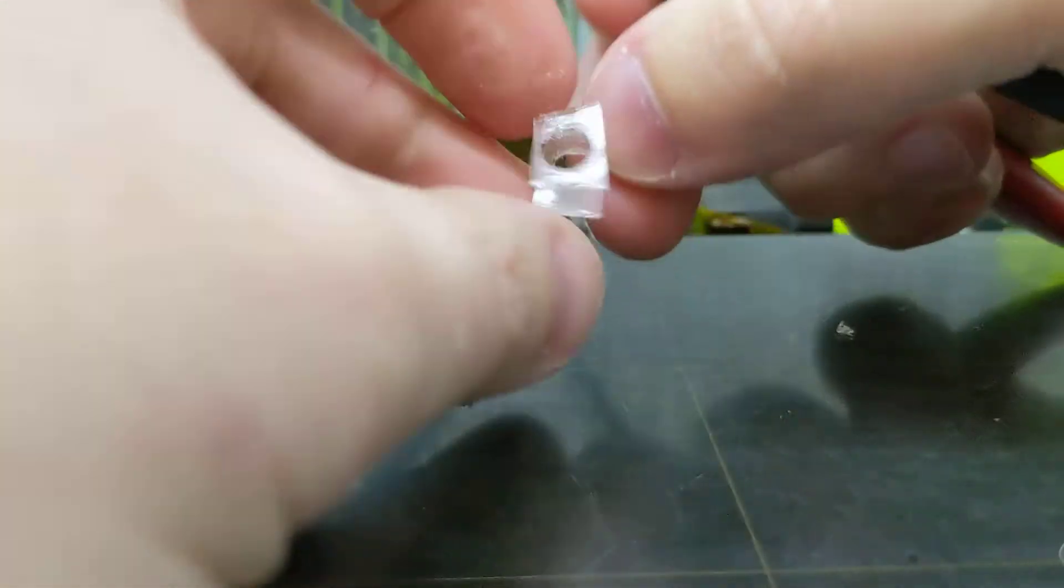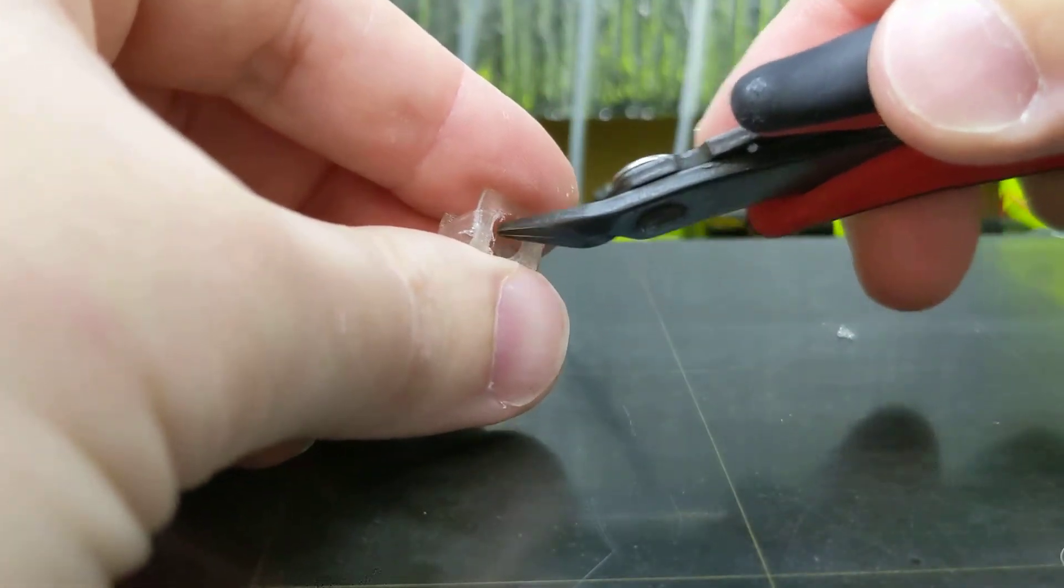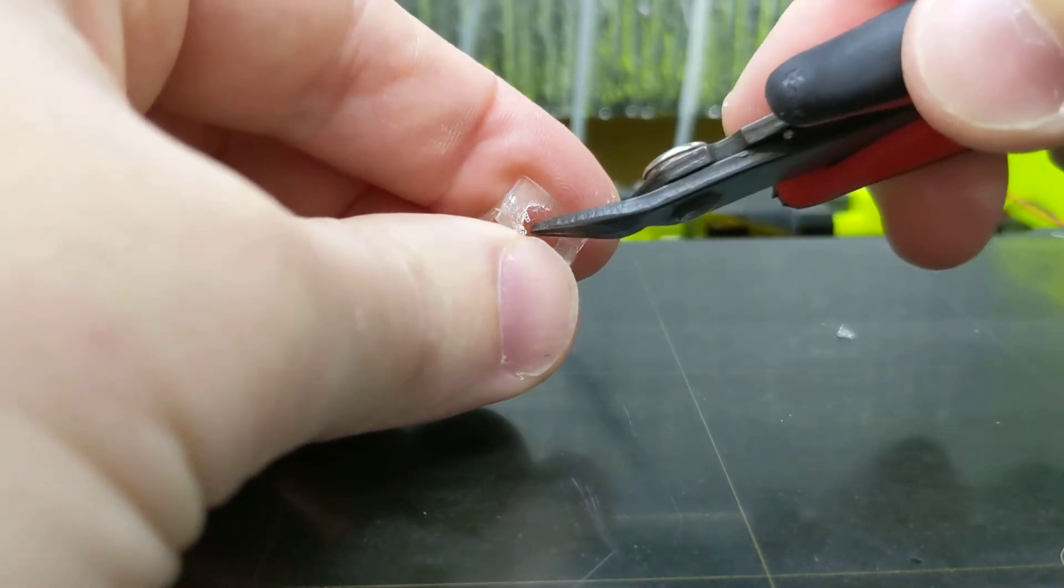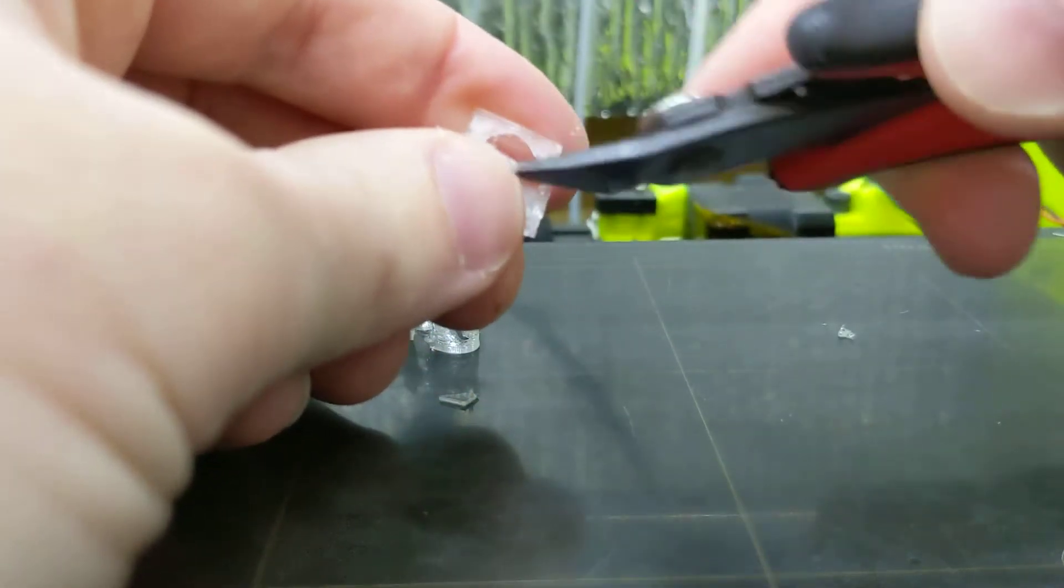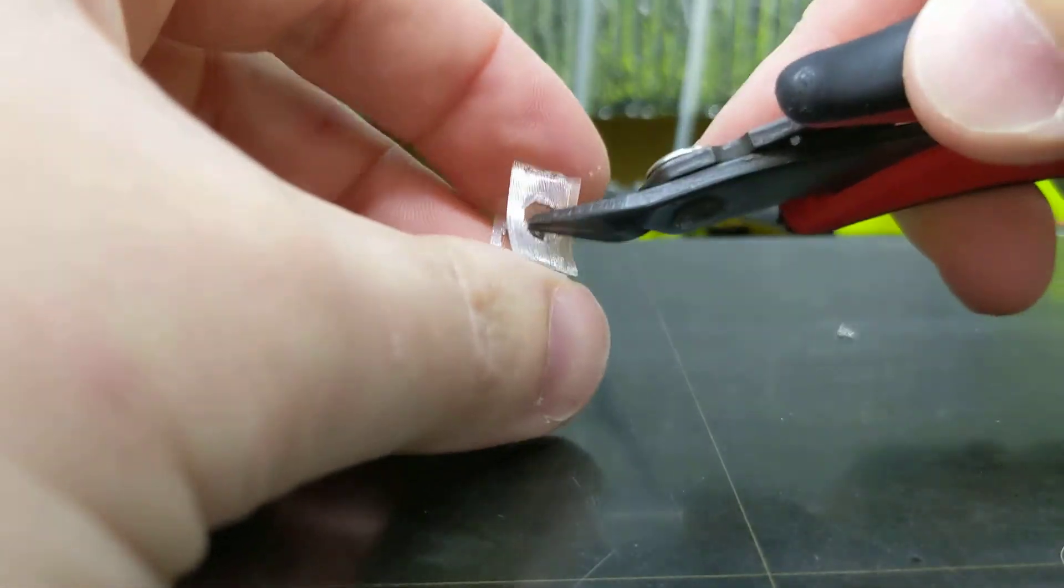So this is what you're going for after you've got it nice and clean. Note that this larger section that goes under the stem, you don't really have to clean that one off that well. If there's a little bit of stringing like that, that's not going to matter because it's just going to sit under the stem and it's not going to affect anything.